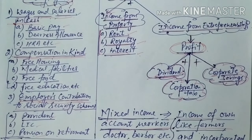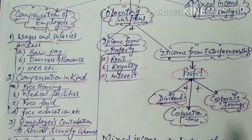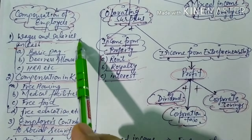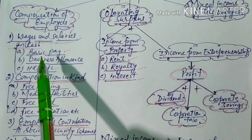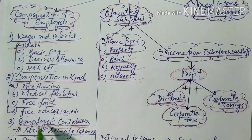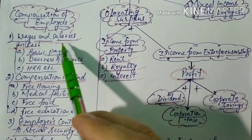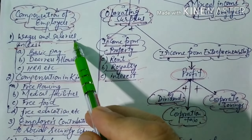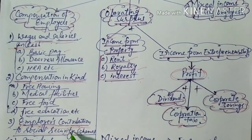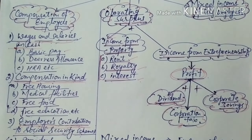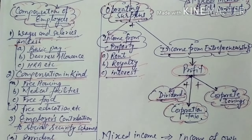Sometimes in a question you are directly given the compensation of employees — that means it already includes all three components: wages and salaries in cash, compensation in kind, and employer's contribution to social security schemes. If they are given separately, you add all three to get compensation of employees. This is the first component.